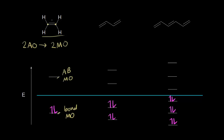Ethene has two pi electrons. Those two pi electrons go into the bonding molecular orbital, and so that orbital is occupied. We could also call this orbital the highest occupied molecular orbital, or the HOMO, and the other would be the lowest unoccupied molecular orbital, or the LUMO.